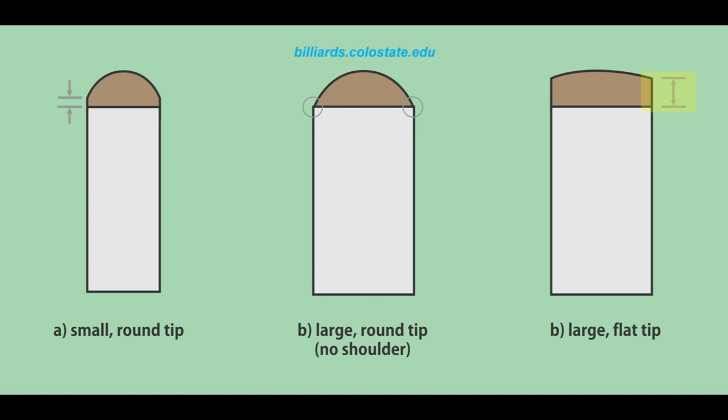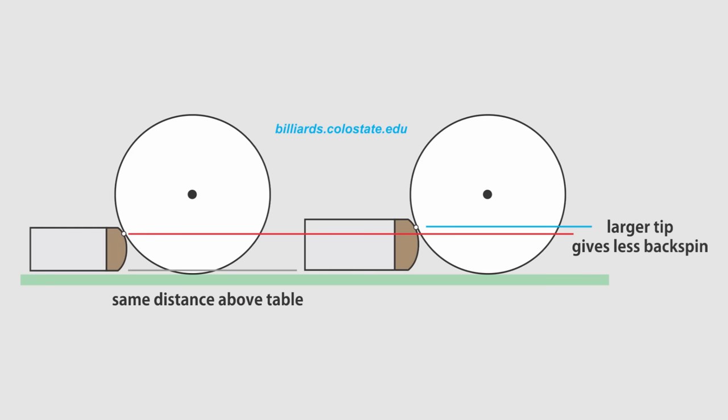A flatter tip on a large diameter shaft will have the largest shoulder and the longest tip life. One possible problem with a large diameter shaft is limited backspin potential. The shaft on the left is smaller than the one on the right, and both tips are about as low as they can go relative to the table. The tip contact point on the cue ball is higher for the larger shaft.